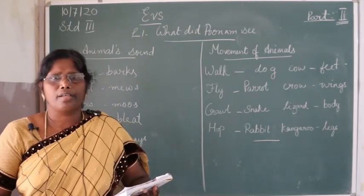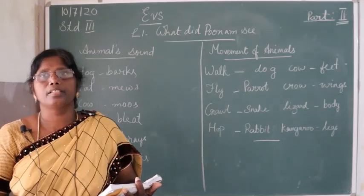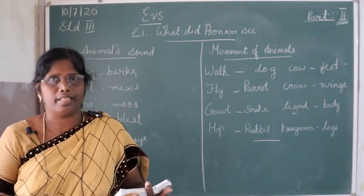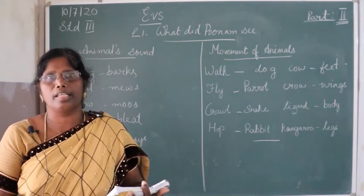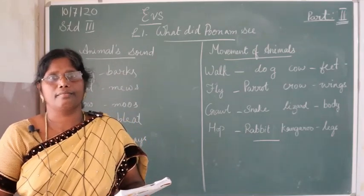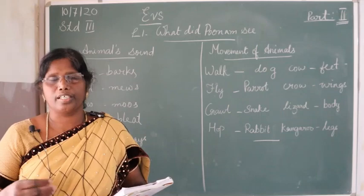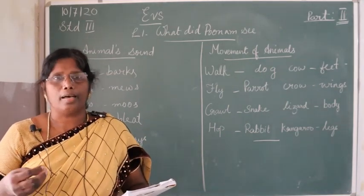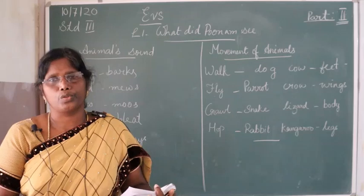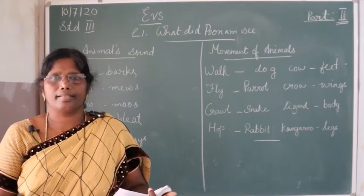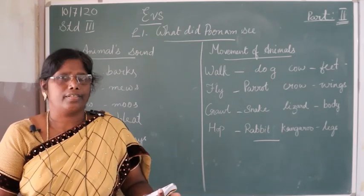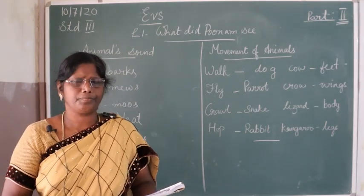Children, what do we call the animals which live around us or we keep them? Such animals are called domestic animals. Domestic animals means the animals which live around us or we keep them with us. The animals which live in the forest are called wild animals.